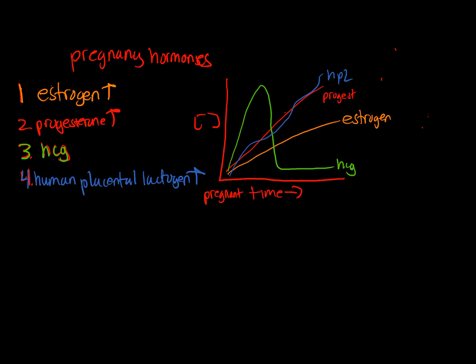Alright, so let's do a little bit of a talk on pregnancy hormones. The four main hormones we're going to care about are estrogen, progesterone, HCG, which is human chorionic gonadotropin, and human placental lactogen. There's a bunch of other hormones that change and increase during pregnancy, but we're going to ignore those for now.